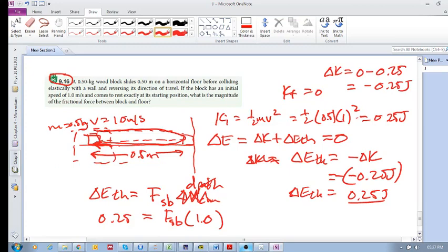If you're considering a spring or gravity, then we only consider the final and initial positions. But if you're considering anything to do with friction, you have to consider the entire path. So now your friction force F_sb is 0.25 divided by 1, so it's 0.25 newtons. Let me just make sure—yeah, that's correct.